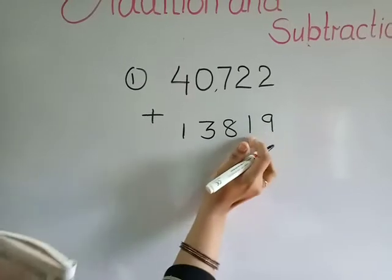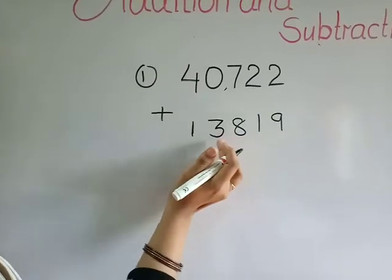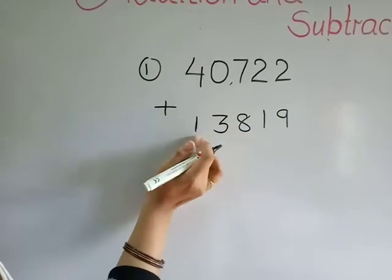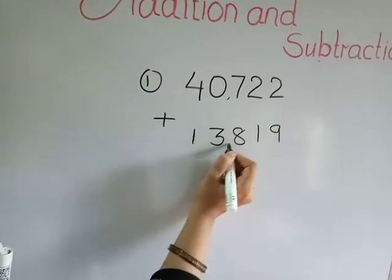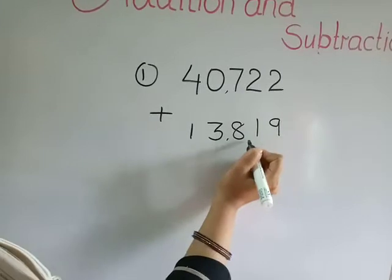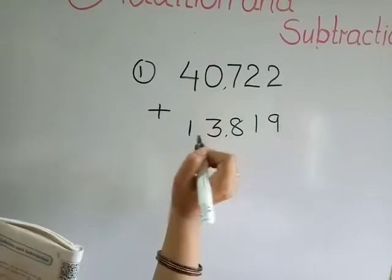Unit, tens, hundred, thousand, ten thousand. Thirteen thousand, eight hundred, nineteen.